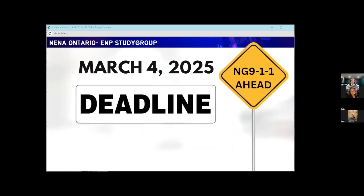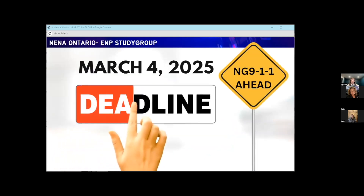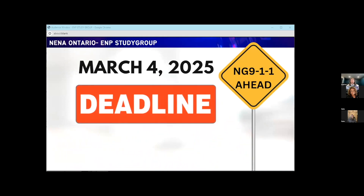The CRTC's telecom decision 2021-199 finalized the NG911 deadline. COVID did play a role in delays, but there has been no change in the date. The ESInet went live in Canada in March 2022 in Bell, TELUS, and SaskTel areas. The first successful test call happened in June 2023 with Toronto Fire. On October 23rd, 2023, Strathcona County PSAP became the first PSAP in Canada to transition to the ESInet in TELUS territory.